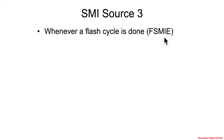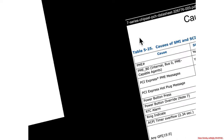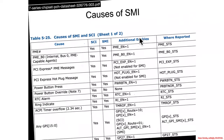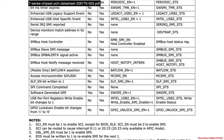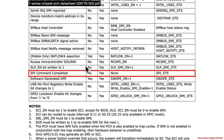The next one is the FSMIE bit, which fires whenever a flash cycle is done. On a big list of SMIs, scrolling down, you find the SPI command completed with no additional enables, recorded in the SPI status. It should be noted that there is some uncertainty about whether this exactly corresponds to FSMIE — it's just the closest thing available.